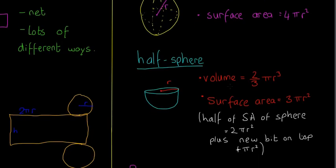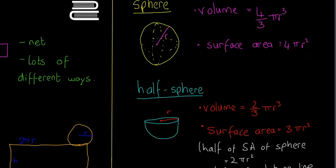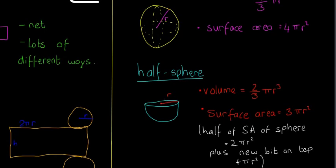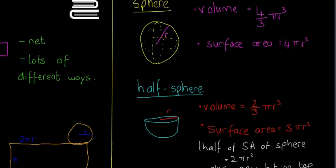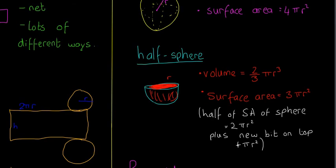A half sphere is a little different. The volume is exactly half of a sphere's volume, so it's 2 over 3 pi r cubed. The surface area is 3 pi r squared, which is trickier. Half of 4 pi r squared gives 2 pi r squared for the curved part, but you also have to add the flat circular face on top, which is pi r squared — giving a total of 3 pi r squared. This isn't in the formula book, so you need to know how to figure it out.